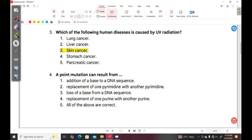Question four: A point mutation can result from - 1. addition of a base to a DNA sequence, 2. replacement of one pyrimidine with another pyrimidine, 3. loss of a base from a DNA sequence, 4. replacement of one purine with another purine, 5. all of the above are correct.